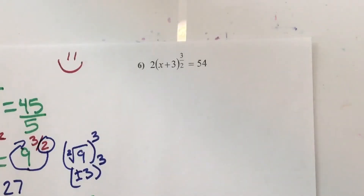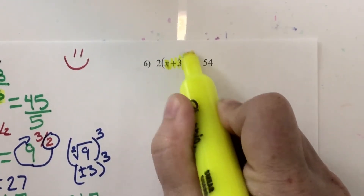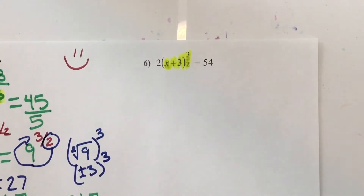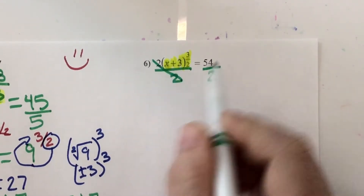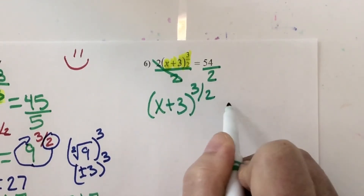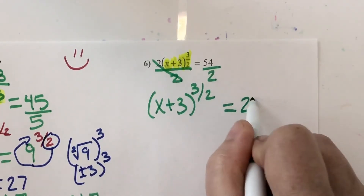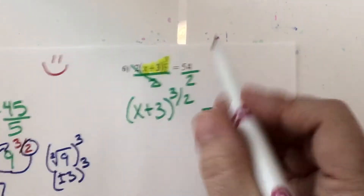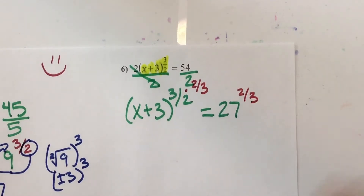Let's look at number 6. The variable that's in parentheses with the fraction exponent — I need to get it by itself before I can do that reciprocal exponent. So how do you get rid of the 2? You divide. Since the 2 is smushed, it's multiplied, so we need to divide. The 2's cancel, leaving (x plus 3) raised to the 3/2, and 54 divided by 2 is 27. Now I'm ready for my reciprocal exponent, which would be 2 over 3. So I'm raising both sides to the 2/3.